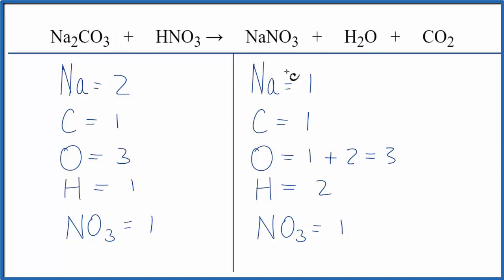Let's just balance the sodiums first. We could put a two as our coefficient in front of the sodium nitrate, the NaNO₃. We have one times two. That'll give us two sodiums, so those are balanced. One nitrate times two. That'll give us two nitrates, so those are balanced.